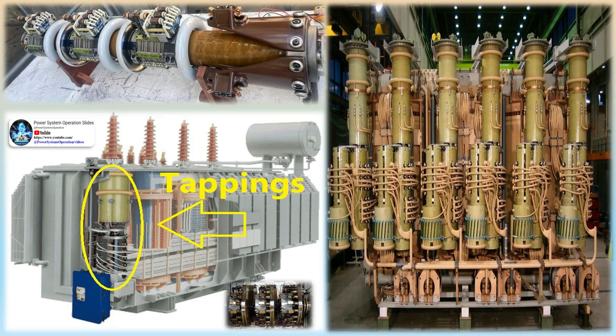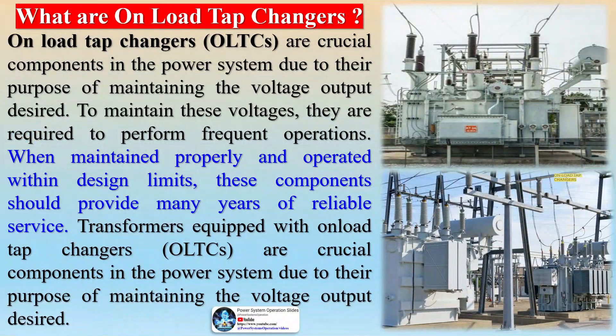Failures in tap changers account for over 20 percent of transformer failures, often resulting in fire or explosions. Arcing, heating, mechanical friction, and wear are the key factors leading to OLTC failures. While the condition of a tap changer can be assessed with regular testing, this is often time-consuming and costly for asset managers. Maintenance is typically scheduled based on the number of operations and is particularly intrusive, involving human intervention that can possibly cause unexpected issues compromising the tap changer operation.